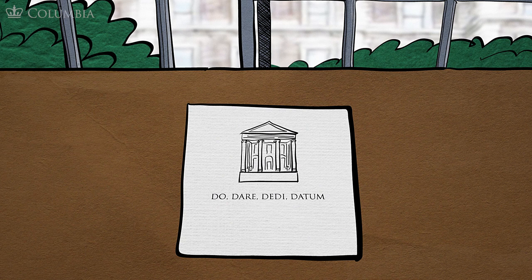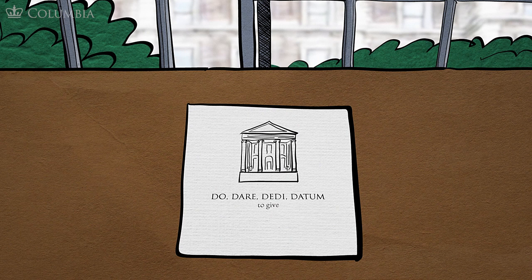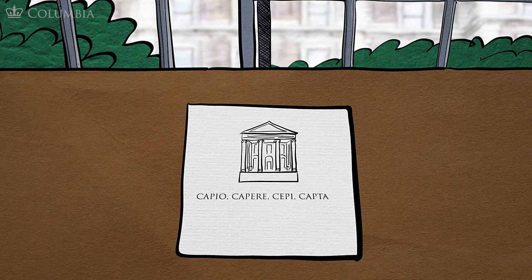Datum in Latin literally means something given. It comes from the same root as the English word donate. When we think about data as something that's freely given, though, we run into conceptual trouble. Instead, Joanna Drucker has suggested using the term capta. Capta is the plural of captum and comes from the Latin verb to capture.